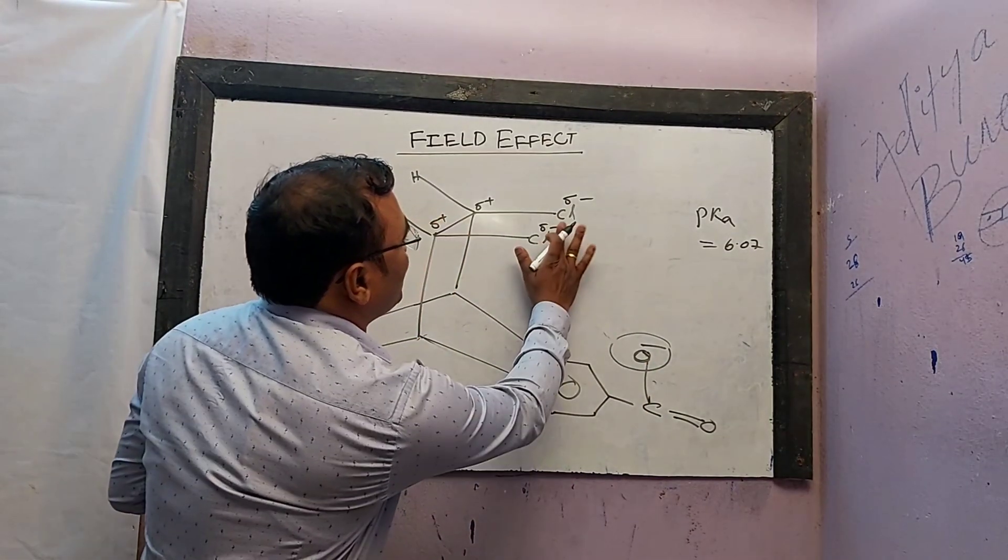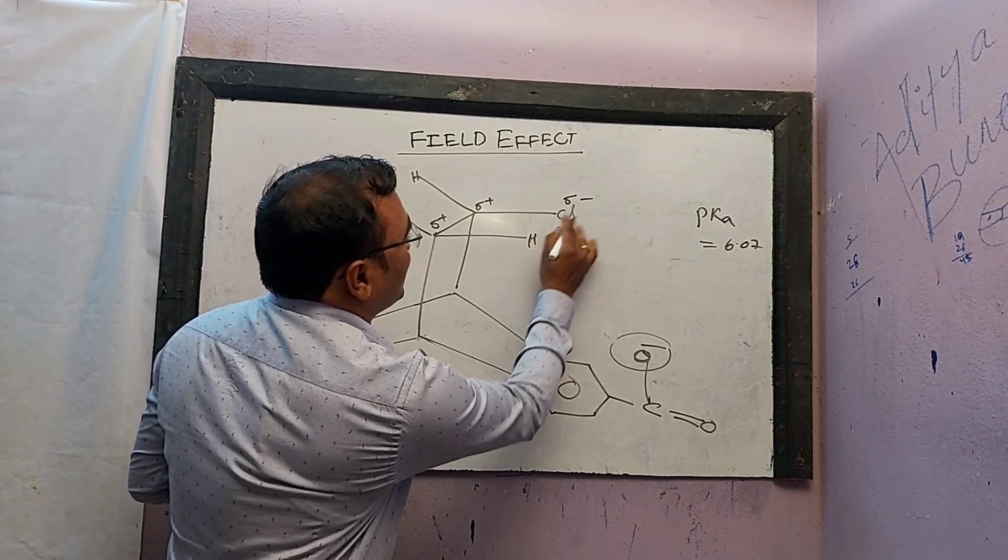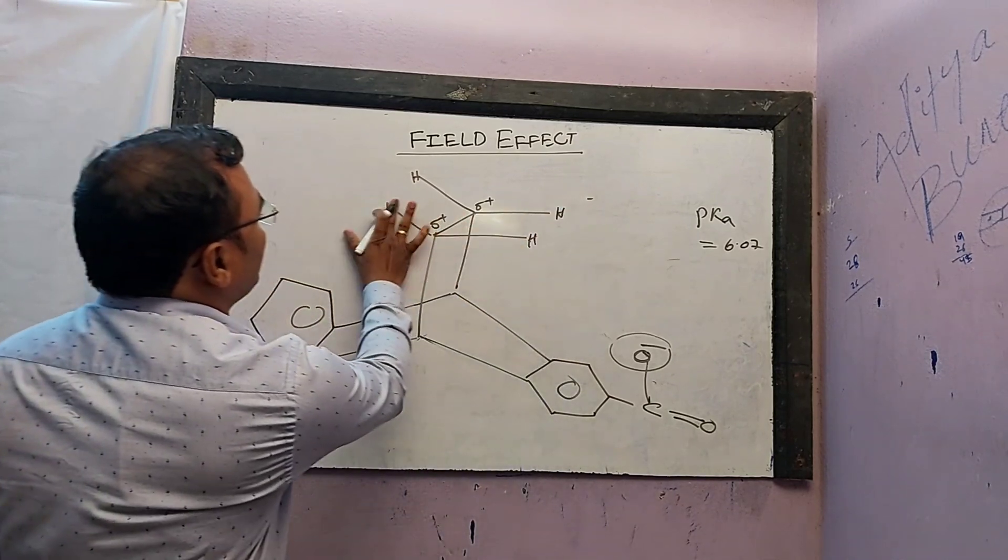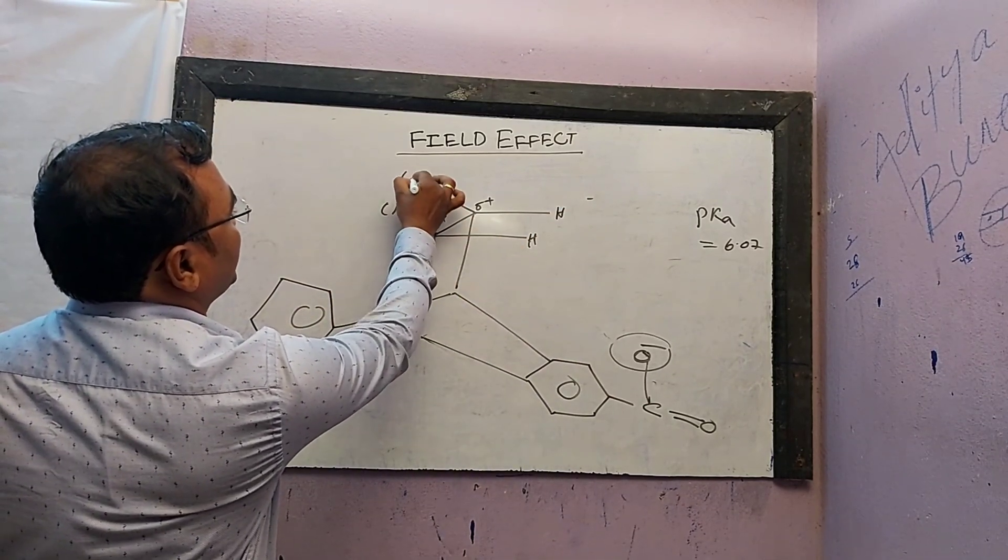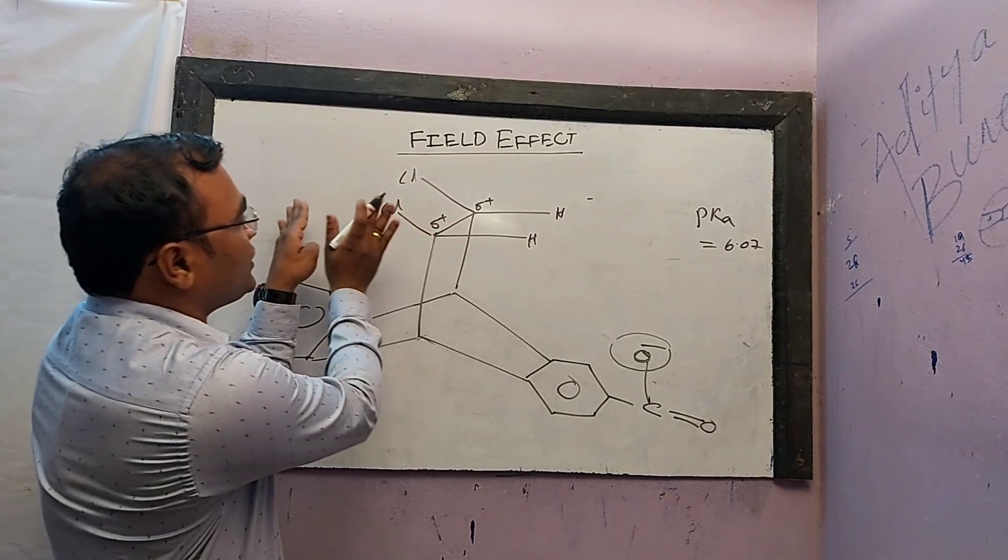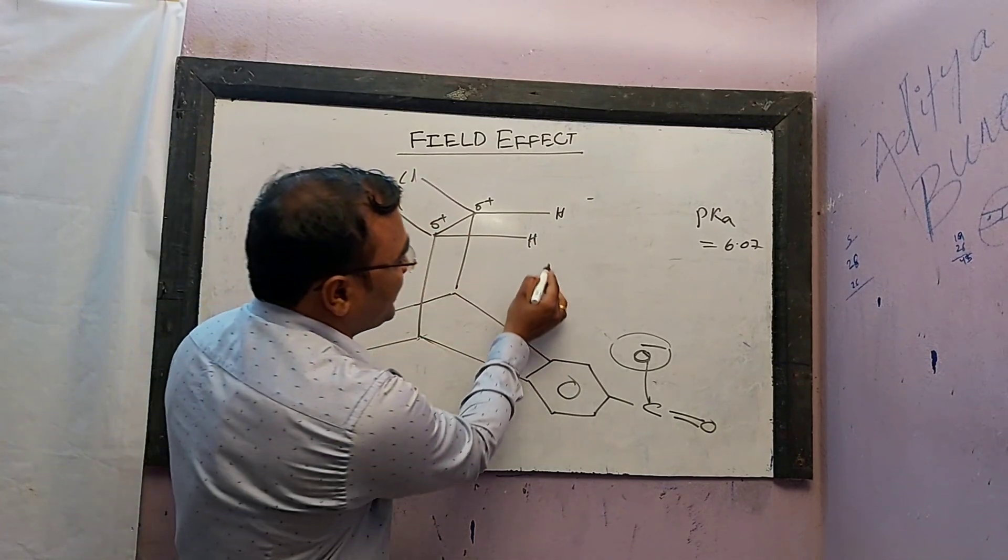So what do I do now? I will change. Chlorine is on the other side. Look at the space, chlorine is on the other side. So now there is no repulsion.